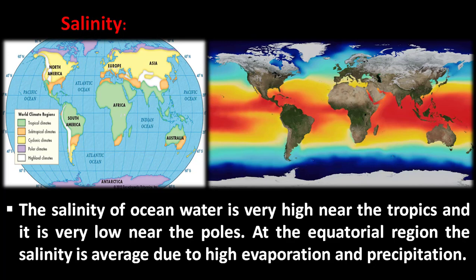The salinity of ocean water is very high near the tropics and very low near the poles. At the equatorial region the salinity is average due to high evaporation and precipitation. Why is sea water salty? The water flowing from the land to the sea via rivers carries many kinds of salts and deposits them in the sea or ocean. Due to high temperature, water is evaporated continuously and the salts remain. This continuous process over a long period of time has resulted in the accumulation of salts in the sea water.